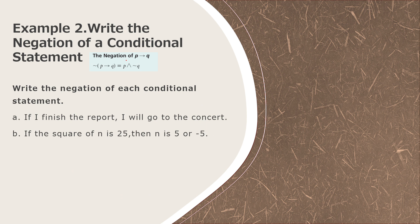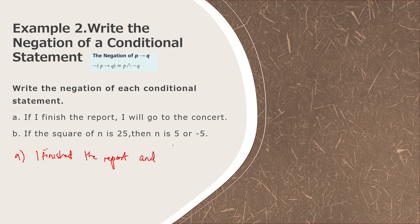Example number two, letter a: 'If I finish the report, I will go to the concert.' So p is 'I finished the report,' and the negation of q is 'I did not go to the concert.' The negation is: I finished the report AND I did not go to the concert.